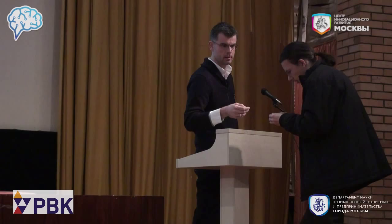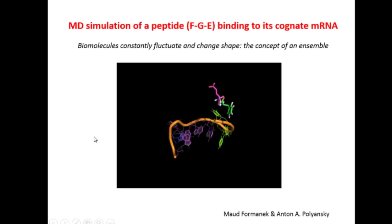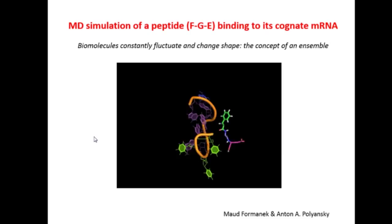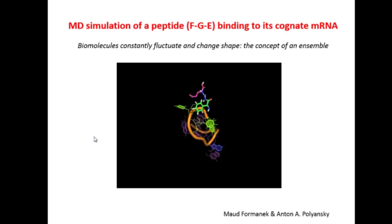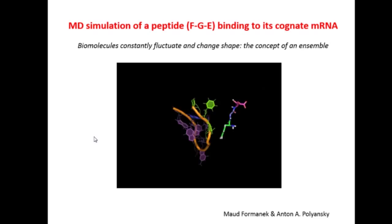Wouldn't it be nice if we could somehow have access to an atomistic picture of the dynamics of biomolecules? What I'm showing here is a snapshot — a very short snapshot — from a typical molecular dynamics simulation showing the dynamics of two biomolecules, in particular a small peptide, a tripeptide binding to its own cognate mRNA. There are only nine bases there, a very poor man's representation of an mRNA.